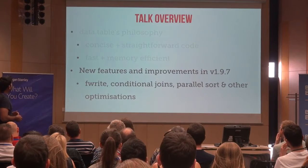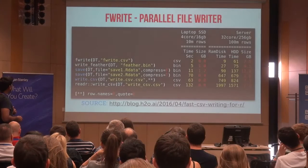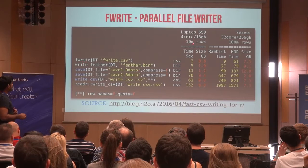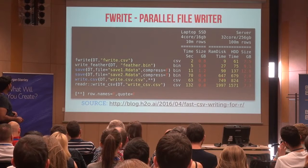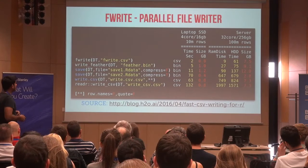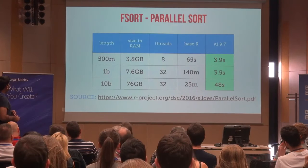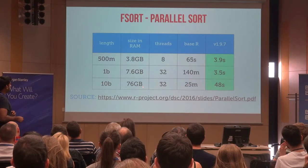The next part of the talk covers new features and improvements in DataTable version 1.5.9.7. The first is fwrite, a parallel file writer written by Matt Dowle, the main author of DataTable. For 10 million rows on four cores it takes about 2 seconds compared to write.csv which takes 63 seconds. On a RAM disk with a 32-core 256 GB server it takes 9 seconds compared to 749 seconds. There's also a new parallel sort — for a 10 billion length vector, 76 gigabytes in size, on 32 cores it takes 25 minutes; base R sort normally takes 48 minutes.